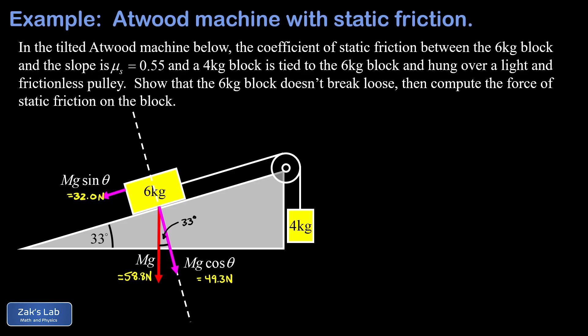Next, we get the normal force into the diagram. So that normal force has to exactly cancel the perpendicular component of gravity pulling the block into the surface of the ramp. It's going to push back with exactly the same force. Symbolically, that's given by mg cosine theta, but we already know that turned out to be 49.3 newtons.